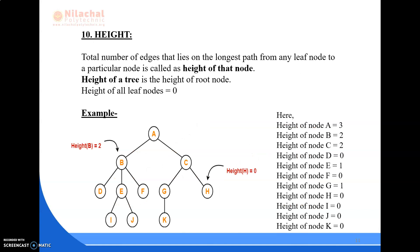Next comes height. The total number of edges that lie on the longest path from any leaf node to a particular node is called the height of that node. The height of the tree is the height of the root node. The height of all leaf nodes is 0. Here, the height of node A is 3, height of node B is 2, height of node C is 2, height of node D is 0, height of node E is 1, height of node F is 0, height of node G is 1, and H, I, J, K are all leaf nodes with height 0.